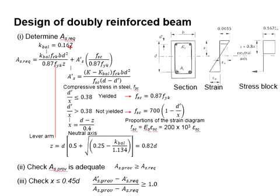To determine the required tension reinforcement bar area, this is the equation. Prior to that, you need to determine the AS prime first, which is the area of the compression reinforcement bar. For you to compute the AS prime, you will have to find the compressive stress in the steel. The compression steel is assumed to be yielded when the D' divided by X is less than 0.38. When it is yield, the nominal yield strength is used with the factor of safety of 0.87.